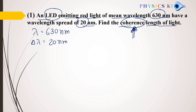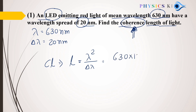The formula for coherence length is L = lambda squared divided by delta lambda, where L is the coherence length. Lambda is 630 nm, that means 630 × 10⁻⁹, whole squared, divided by delta lambda which is 20 × 10⁻⁹.